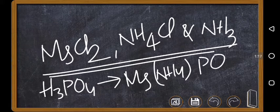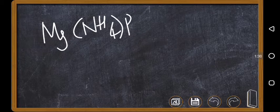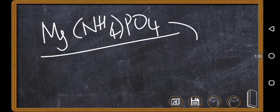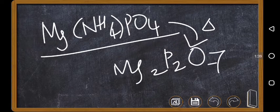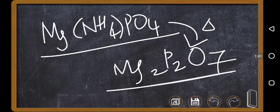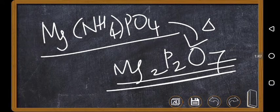Magnesium ammonium phosphate, MgNH₄PO₄, is formed. On heating, this magnesium ammonium phosphate turns into Mg₂P₂O₇, which is called magnesium pyrophosphate. So finally, all the phosphorus in the organic compound is converted into Mg₂P₂O₇.